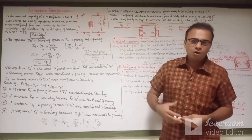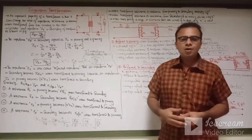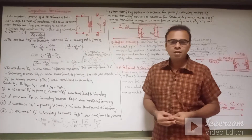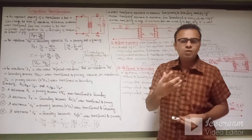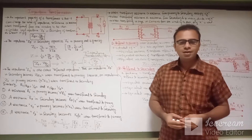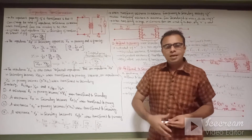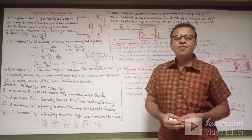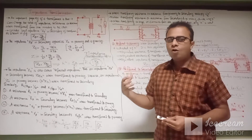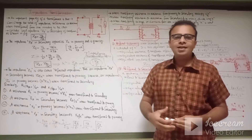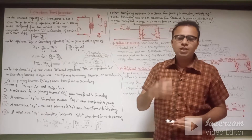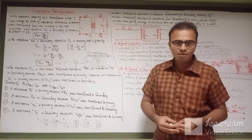Before starting the lecture regarding impedance transformation in the transformer, we need to know what is impedance in the magnetic circuit. Impedance can be defined as the opposition offered by the magnetic circuit to the flow of current.